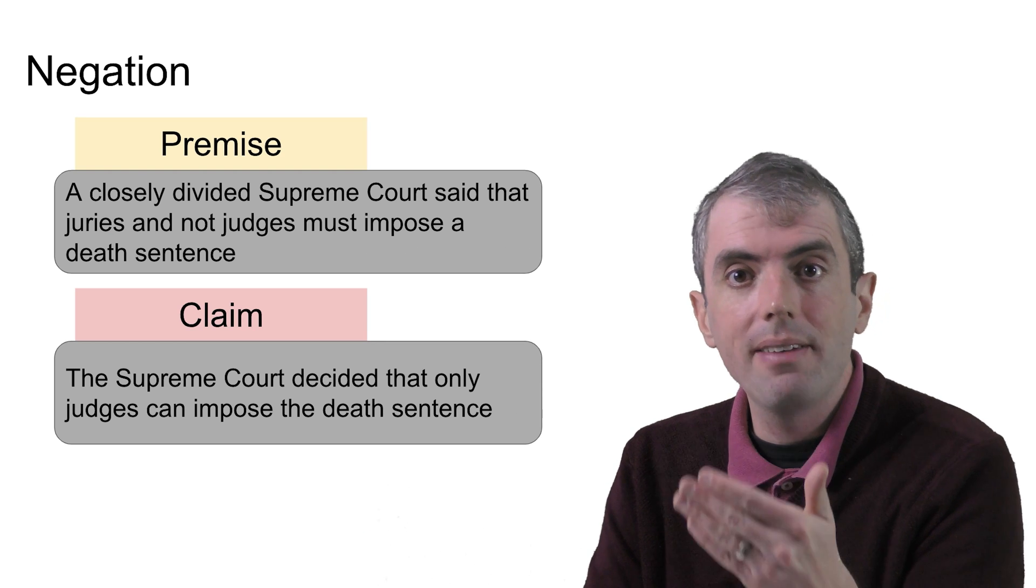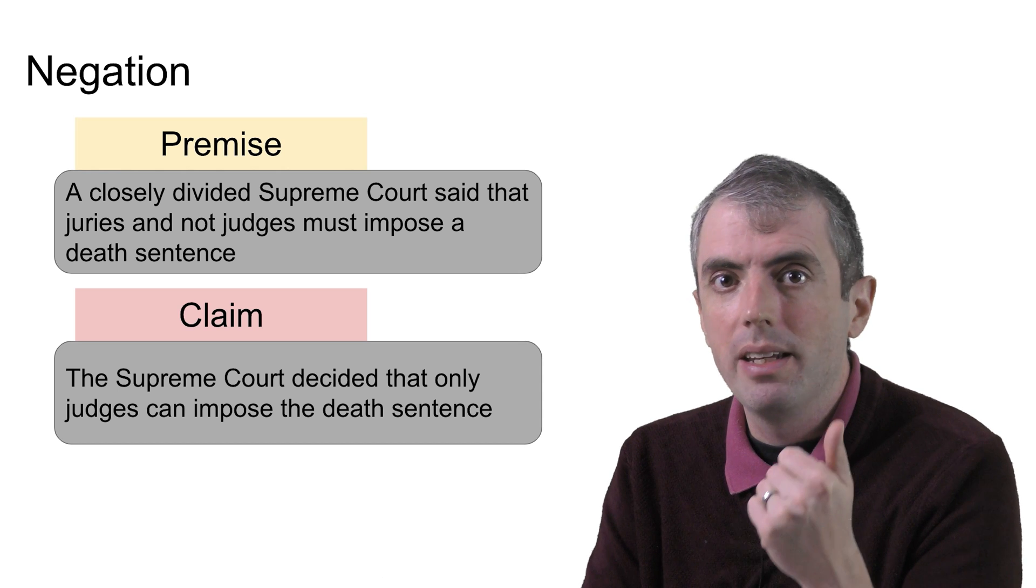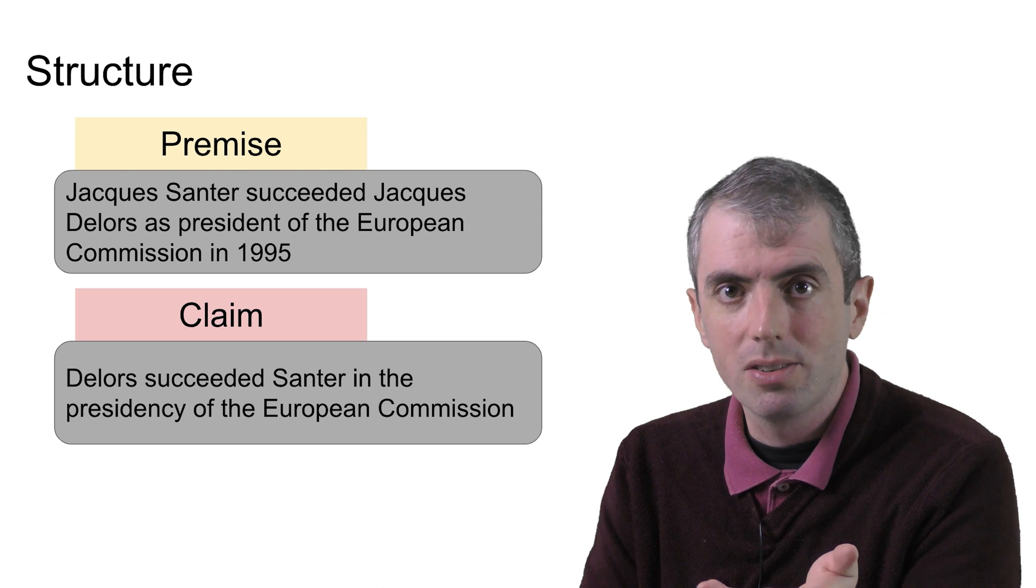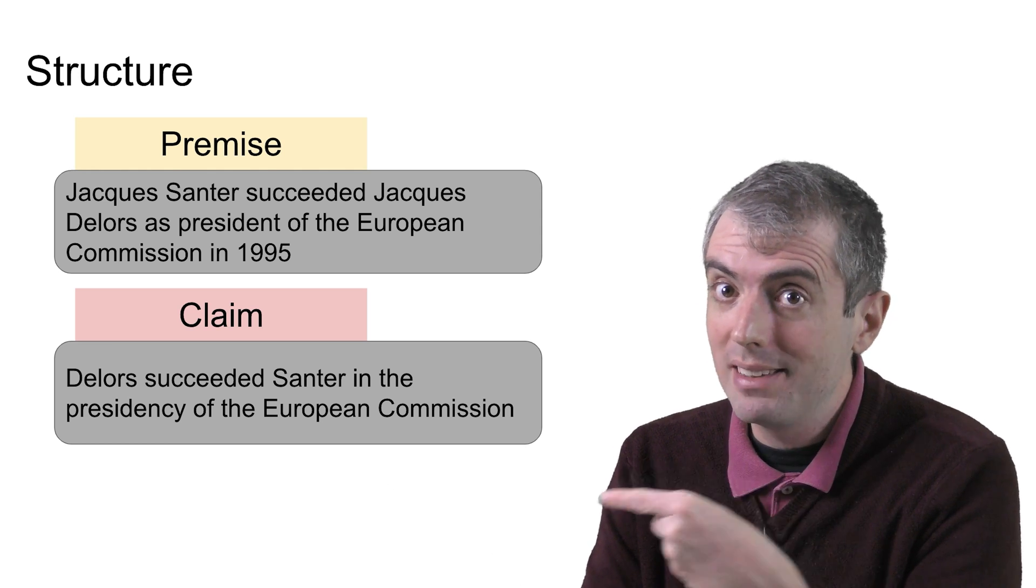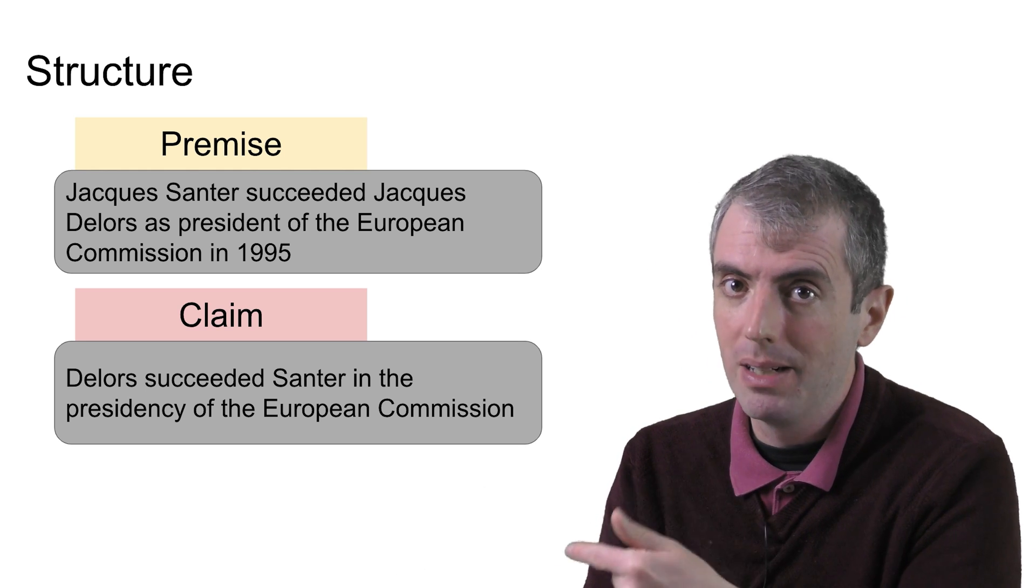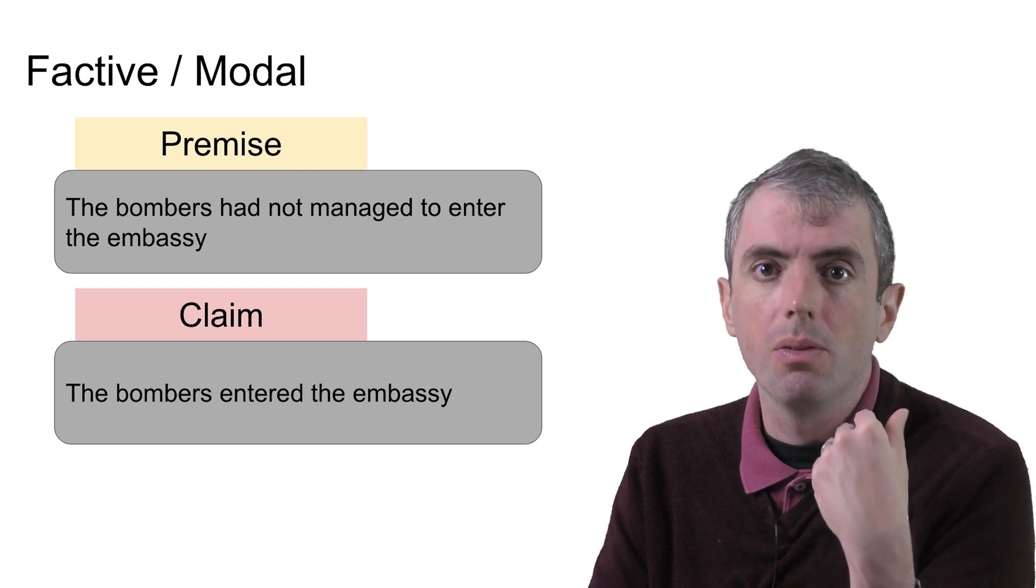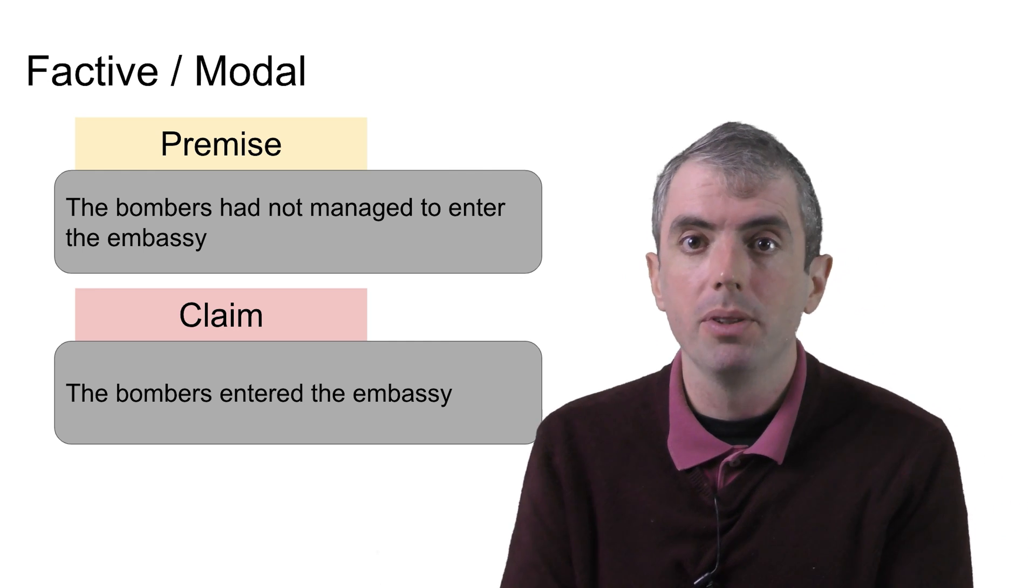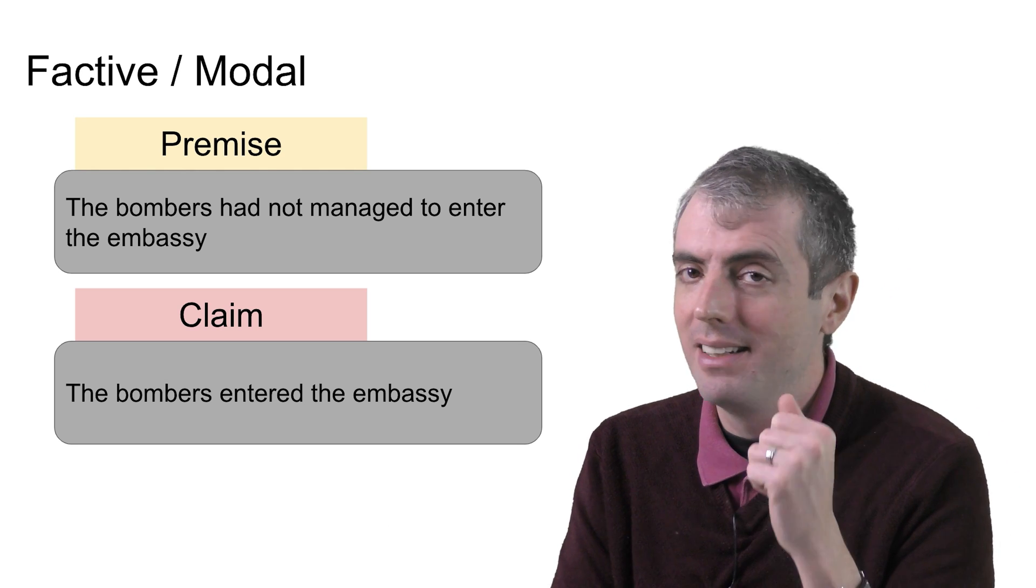You also need to reason about syntax. Here you have a negation on impose the death sentence, and you need to know that it applies to judges. There are also more complicated syntactic structures. You need to know that if x succeeds y, that doesn't mean that y succeeds x. In contrast, if x marries y, that does mean that y marries x. There are whole categories of verbs called modal and factive verbs that show whether an action has been completed or is impossible to do. These models need to learn that not managing to do something means that it didn't happen.